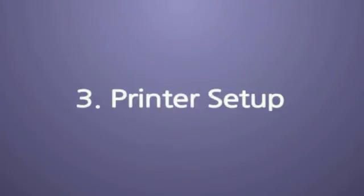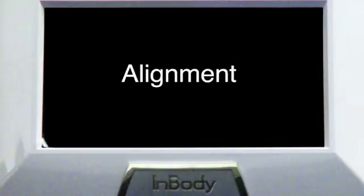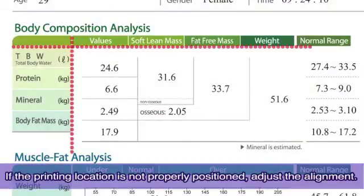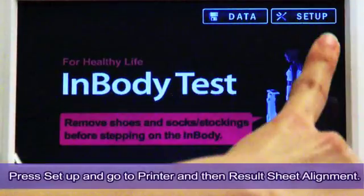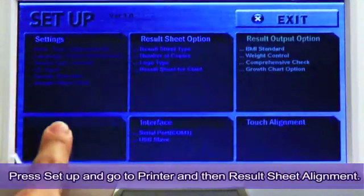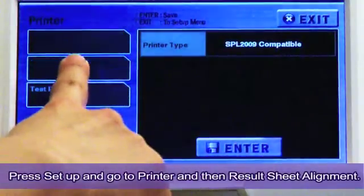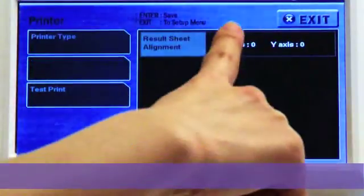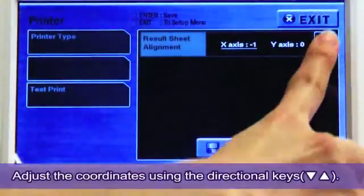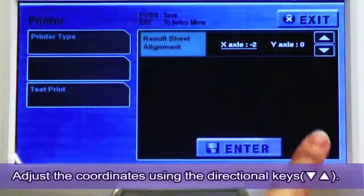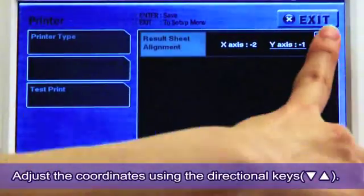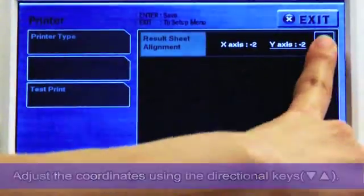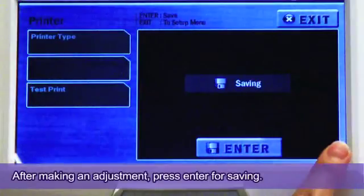Step 3: Printer Setup. Result Sheet Alignment. If the printing location is not properly positioned, adjust the alignment. Press Setup, Printer, and then Result Sheet Alignment. Adjust the coordinates using the directional keys.